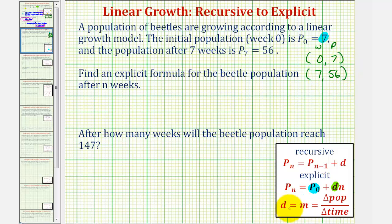Now we can find the common difference d, which is the change in population divided by the change in time. So d equals the difference in p divided by the difference in w. We have (56 - 7) divided by (7 - 0),